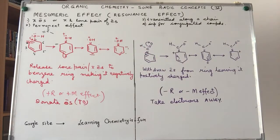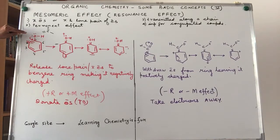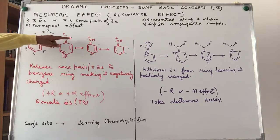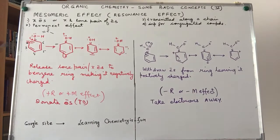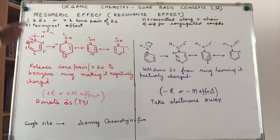This is what mesomeric or resonance effect is. The difference between resonance and this effect: it is the mesomeric effect that leads to resonance, which is why it is called the resonance effect. In resonance we don't talk about plus and minus; here we talk about two types of groups. In the phenol example, the group is releasing electrons towards the benzene ring — that is a plus R or plus M effect, because the group itself is acquiring a positive charge.